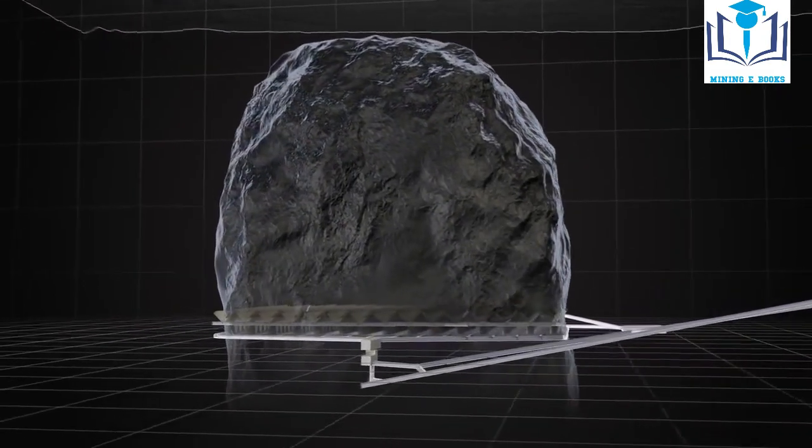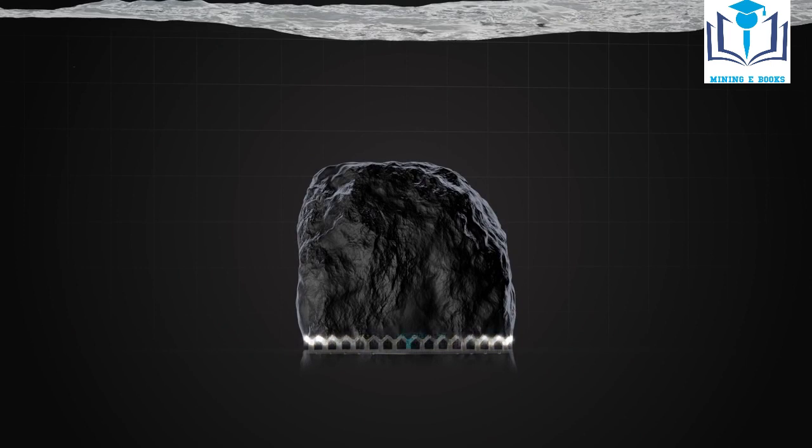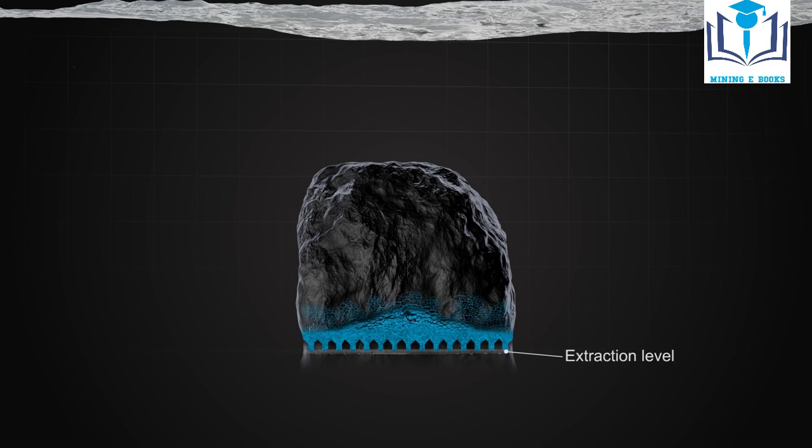By drawing rock from the extraction level in the lower part of the mine, a gap is created. Absence of support for the overlying rock mass, together with rock stress and gravity, will cause the rock mass to cave.